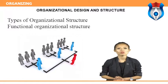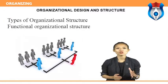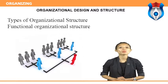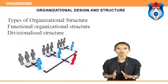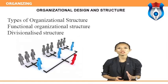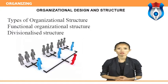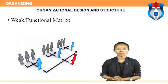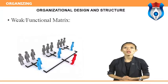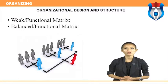Types of organizational structure: Functional organizational structure — employees within the functional division tend to perform a specialized set of tasks; for instance, the engineering department would be staffed only with software engineers. Divisionalized structure, also called a product structure, groups each organizational function into a division. Matrix structure groups employees by both function and product. In a weak functional matrix, a project manager with only limited authority oversees the cross-functional aspects of the project. In a balanced functional matrix, a project manager is assigned to oversee the project.